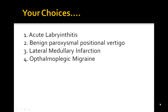Acute labyrinthitis is generally viral in origin. The patient would present with a respiratory illness lasting a week or several days and then suddenly complain of vertigo. In our case scenario, we did not have any signs of a viral illness. Treatment for this would be meclizine. So I'm putting this a little bit lower on our differential.